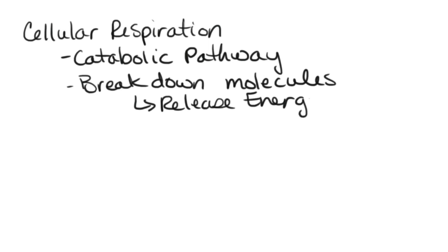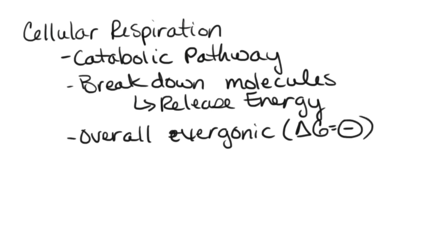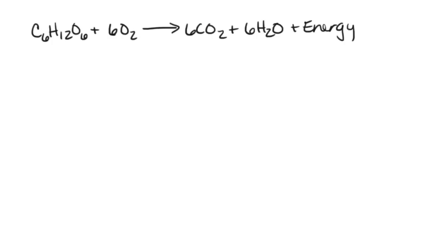That energy that is released would be energy that we could use for other reactions inside the cell that would actually require energy. So overall, this process will be exergonic, and another way to say that would be that the delta G is going to be negative when we look at that.